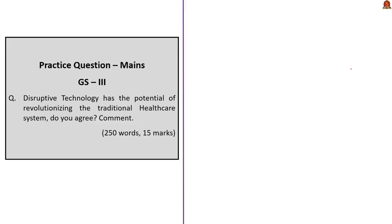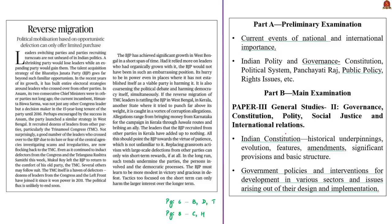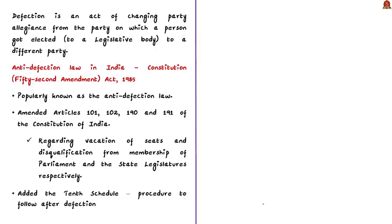The next article concerns political defection in India, discussing the enormous growth of a particular political party and the role of defection in it. Defection is an act of changing party allegiance from the party on which the person was elected to a different party. It has historically caused the formation as well as the breaking of governments. Political defections have been very common in India for decades.